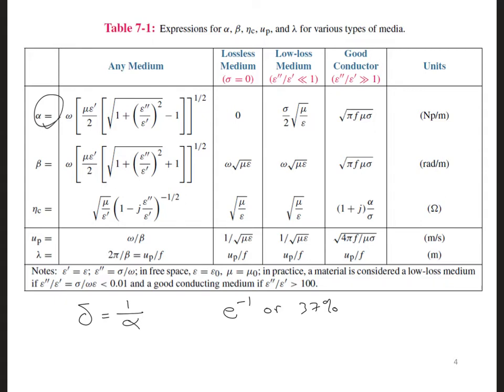For free space, alpha is equal to 0, and this means that there's no attenuation of the electromagnetic wave, and the skin depth, then, is infinite. So this means that the wave will propagate forever with no attenuation.